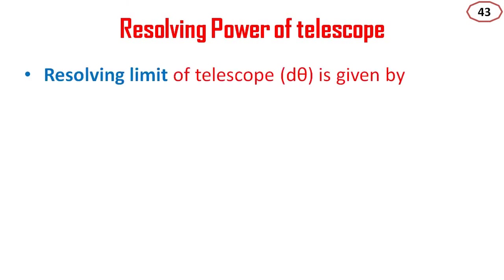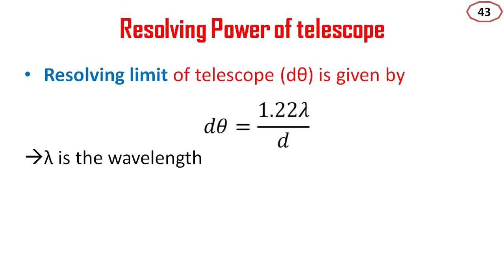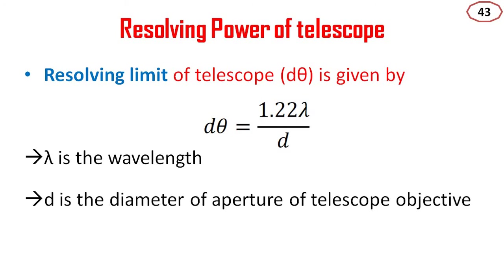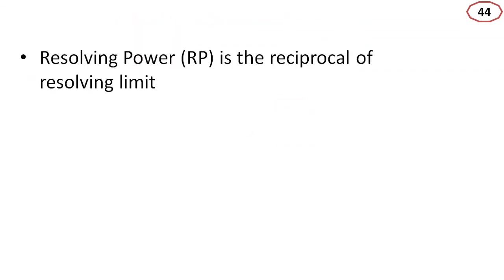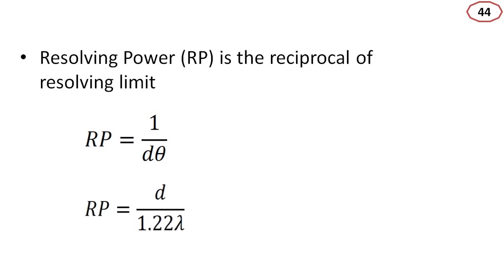Resolving power of a telescope: the resolving limit of a telescope is represented by d theta and is given by d theta equals 1.22 lambda by D, where lambda is the wavelength and D is the diameter of the aperture of the telescope objective. The resolving power Rp is the reciprocal of the resolving limit, that is, Rp equals 1 by d theta, or Rp equals D by 1.22 lambda.